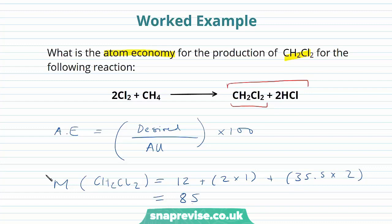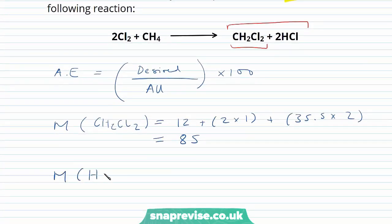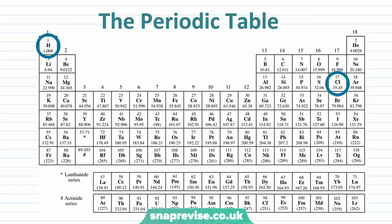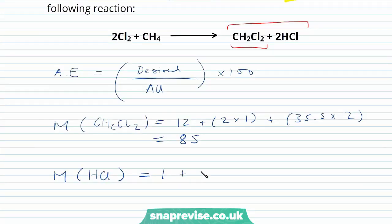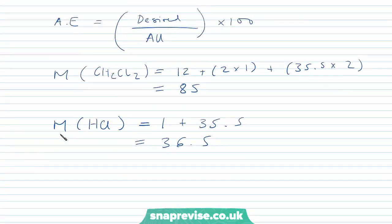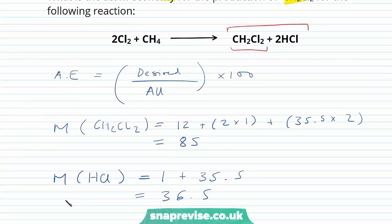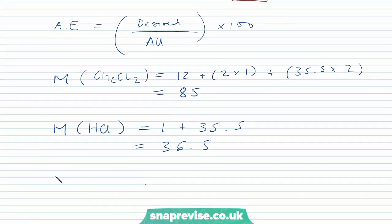Now we need to work out the molar mass of HCl. Chlorine has a molar mass of 35.5 and hydrogen 1, so that's 1 plus 35.5 to give us 36.5. In our reaction, we are forming one mole of dichloromethane for every two moles of HCl, so we multiply 36.5 by 2 to give us 73.